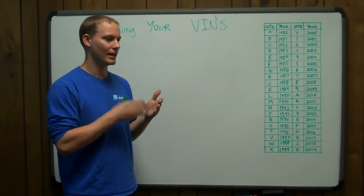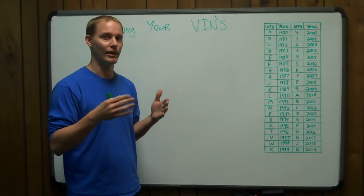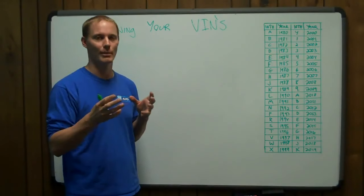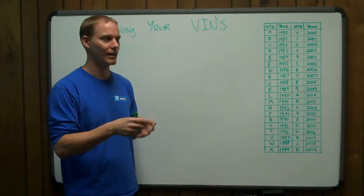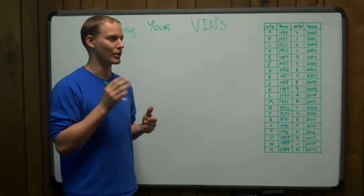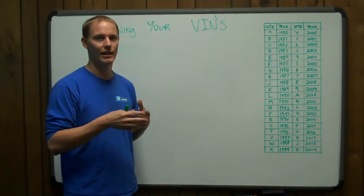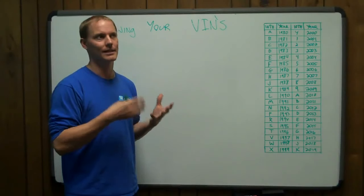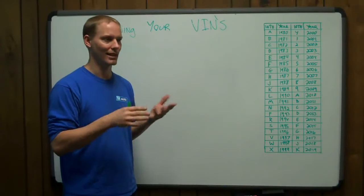That meant that each number within the VIN meant something specific about that car, whether it was their number in production line, or the color, or the trim, or the engine size, or the year. It all meant something, except for one of those digits, but we'll get into that later.